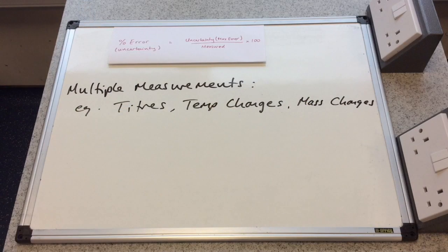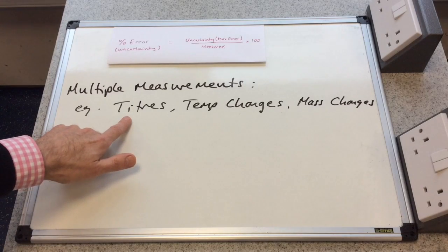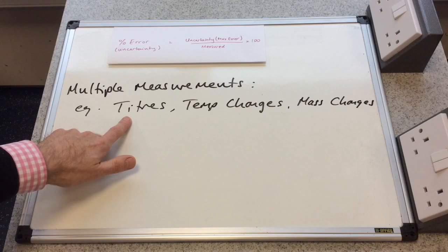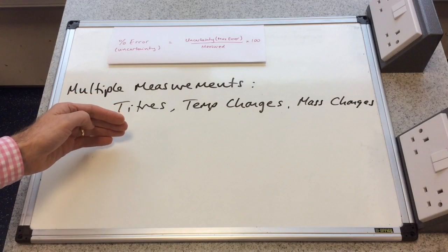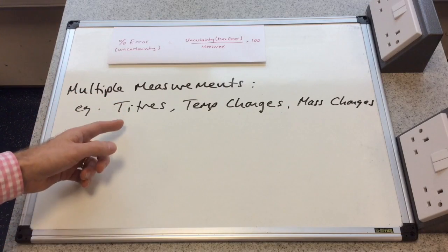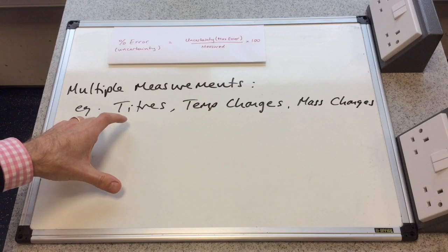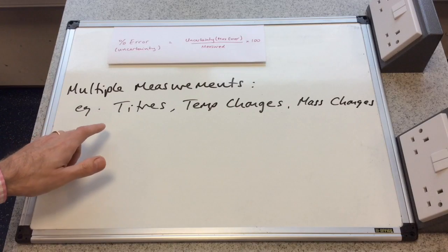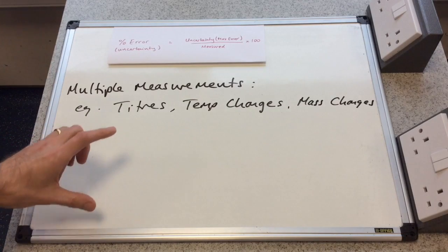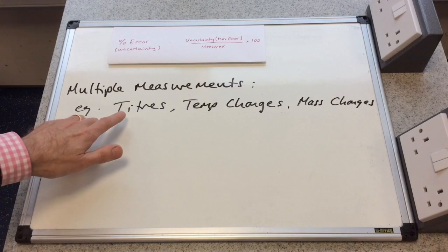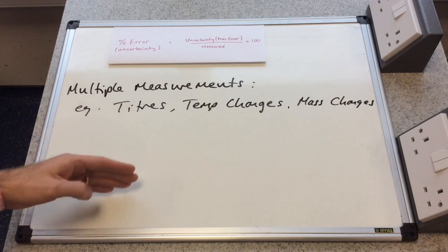So in all of those four examples, I was actually just taking single measurements with the apparatus. So what about if you have multiple measurements? So there's three examples on the board there. If you're measuring a titrant in a titration, you have an initial burette reading and a final burette reading, and the titrant is the difference between those two readings. So essentially, you are doubling the error because you're using the burette twice to do the measuring.